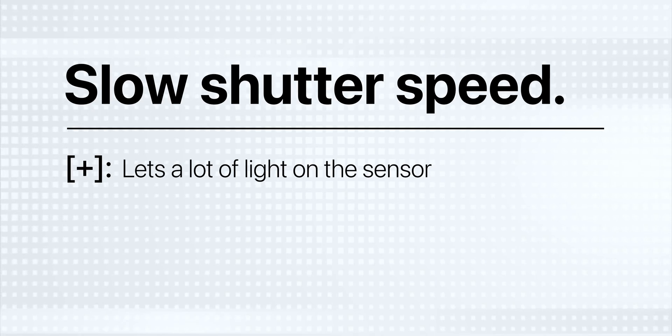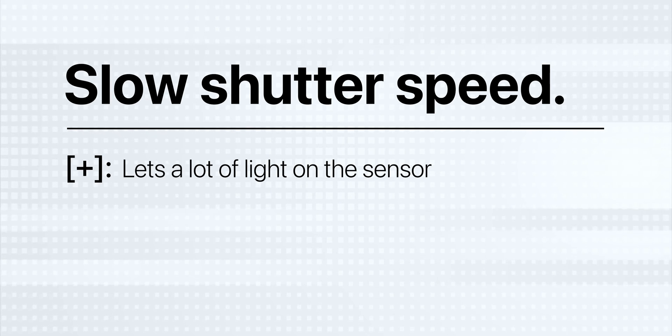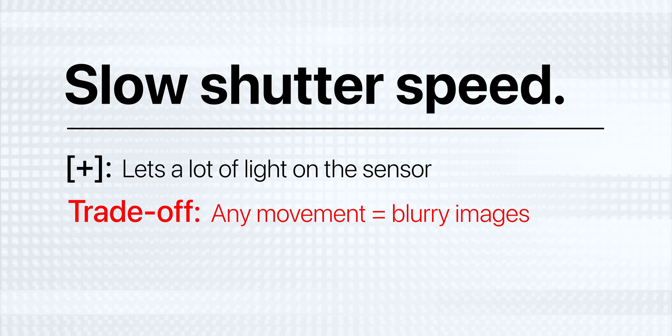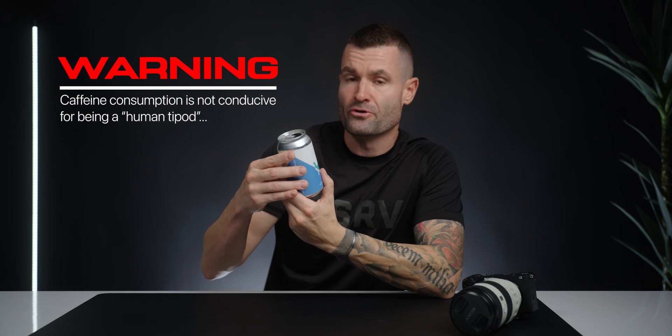Back to those trade-offs. When we use a slow shutter speed, it's great because we can let a lot of light onto the sensor, which can be really helpful in low light situations. But because the sensor is exposed for so long, anything that's moving in the frame is going to have natural motion blur — great if that's the look you're going for, but not so good if you want a sharp image. This also means that even if you're shooting something static, if you're doing a handheld shot with a low shutter speed, even your own micro movements are going to make the image a bit blurry.